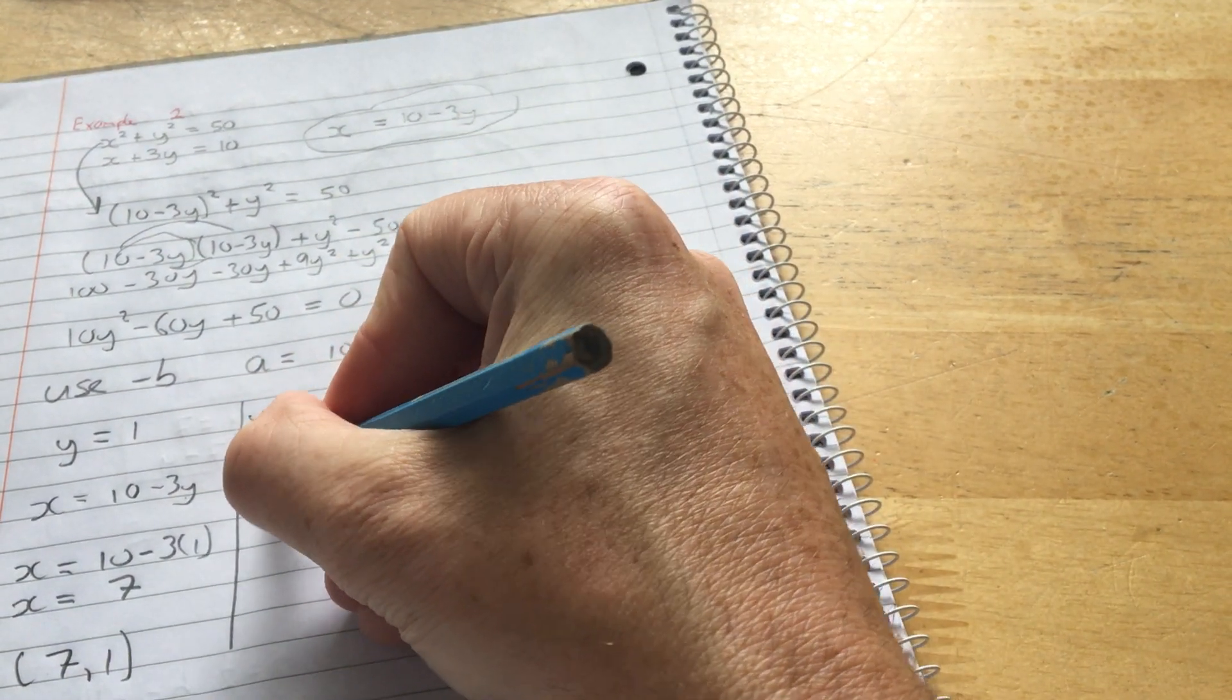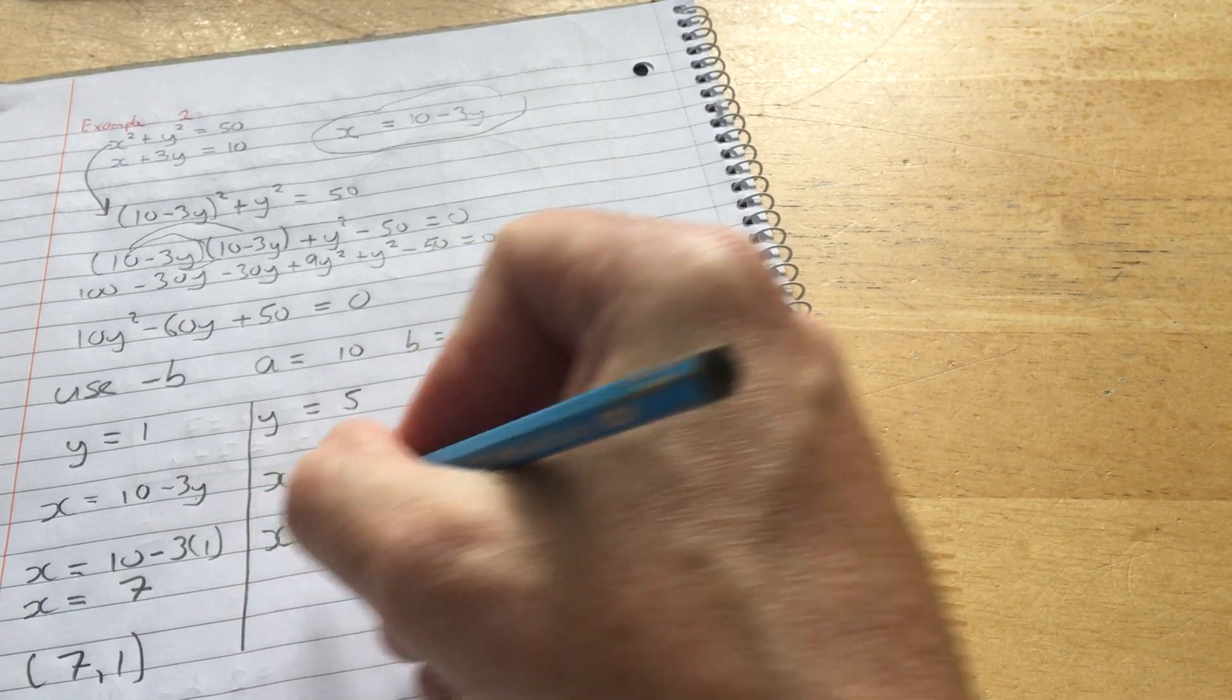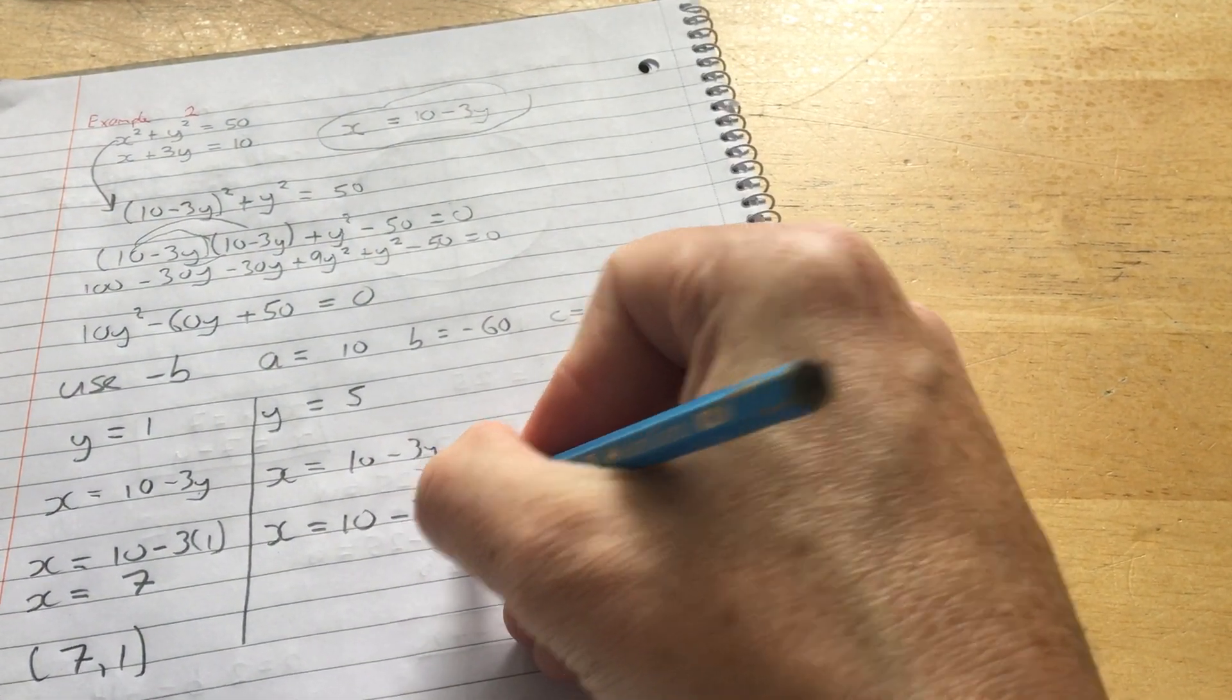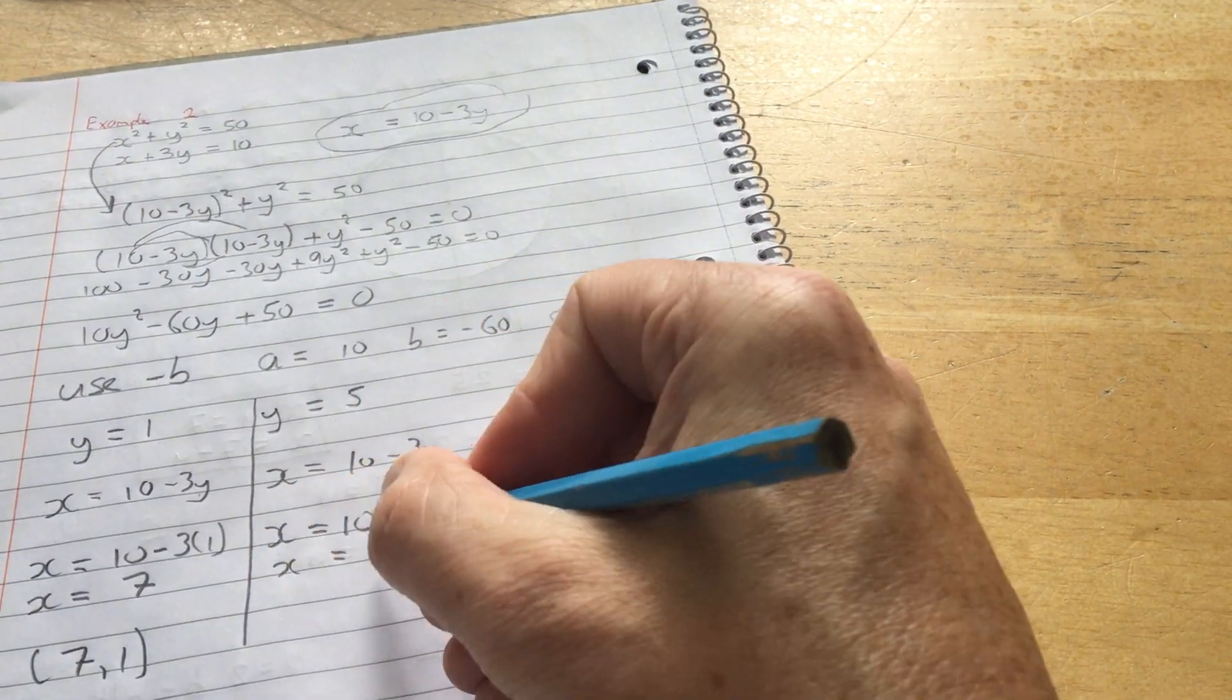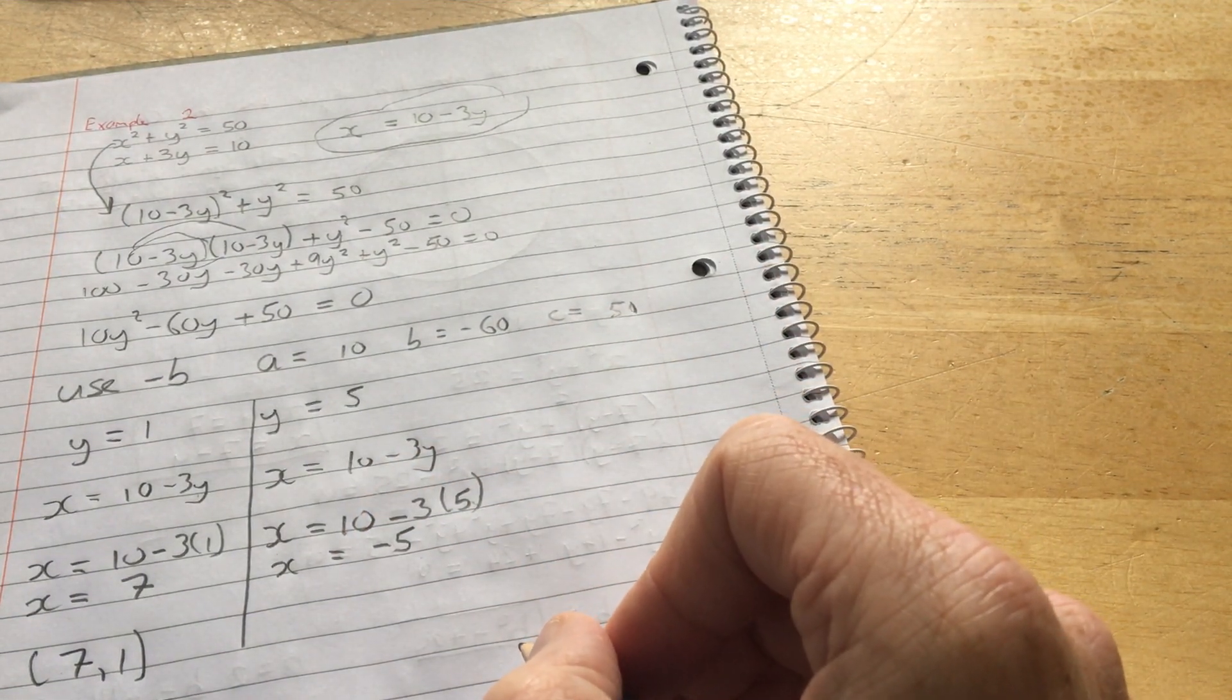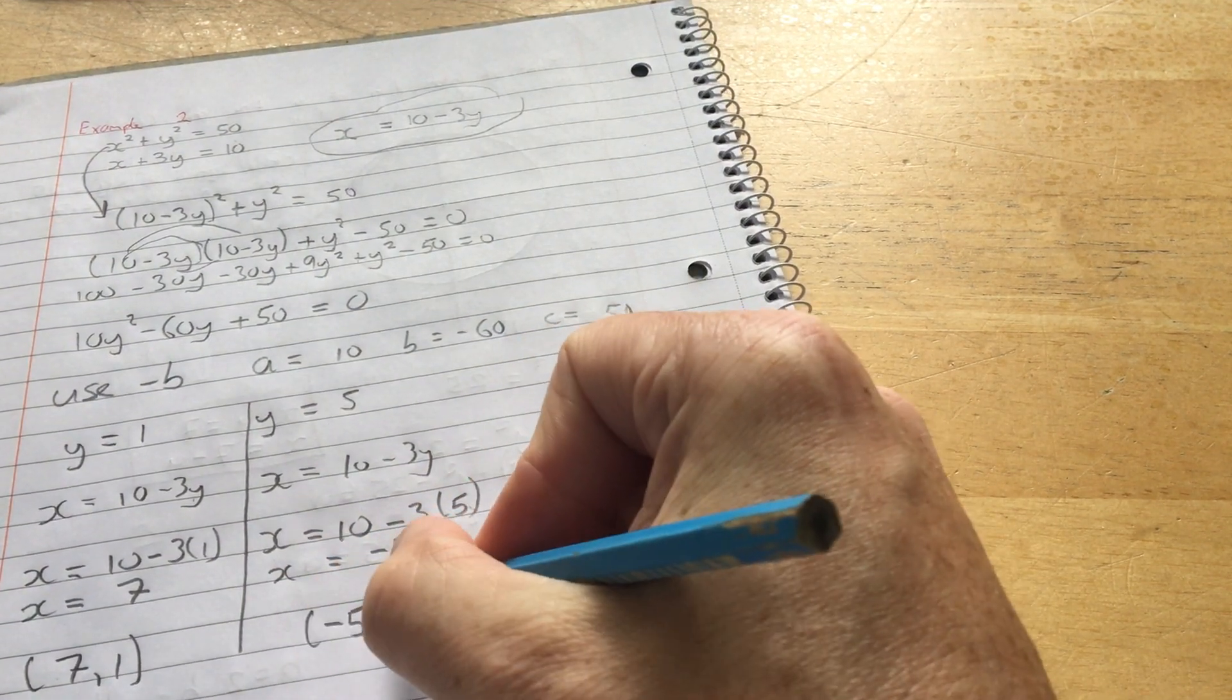And the second point of intersection. This time, y is 5. Substitute 5 into this. Minus 3 times 5 is minus 15. 10 take away minus 15 is minus 5. So the second point of intersection is x is minus 5 and y is 5.